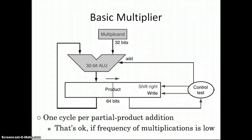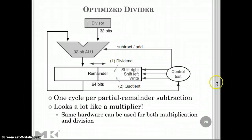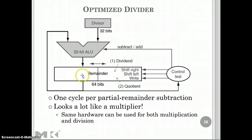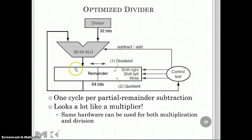The divider is more complicated. I've set up a little example with very similar hardware. Here's the divider — I've got the divisor, another 32-bit ALU, and the same style remainder shifter. In this case, we're going to be shifting right the whole time, going the opposite direction. We can use the same hardware for both: all shifts for multiplication go left, all shifts for division go right.